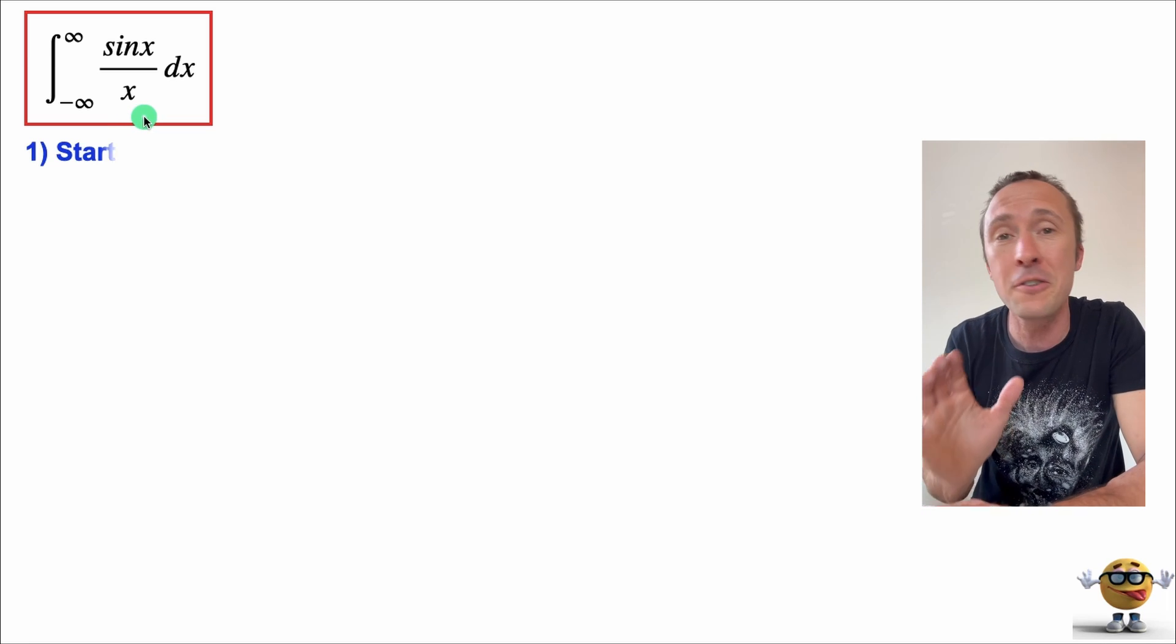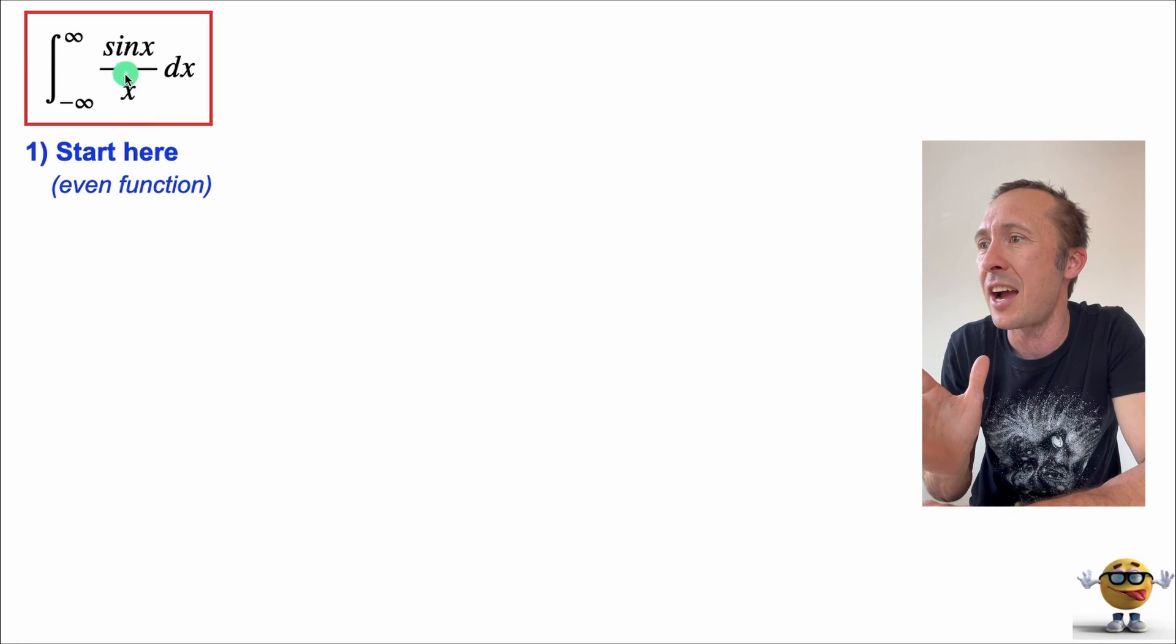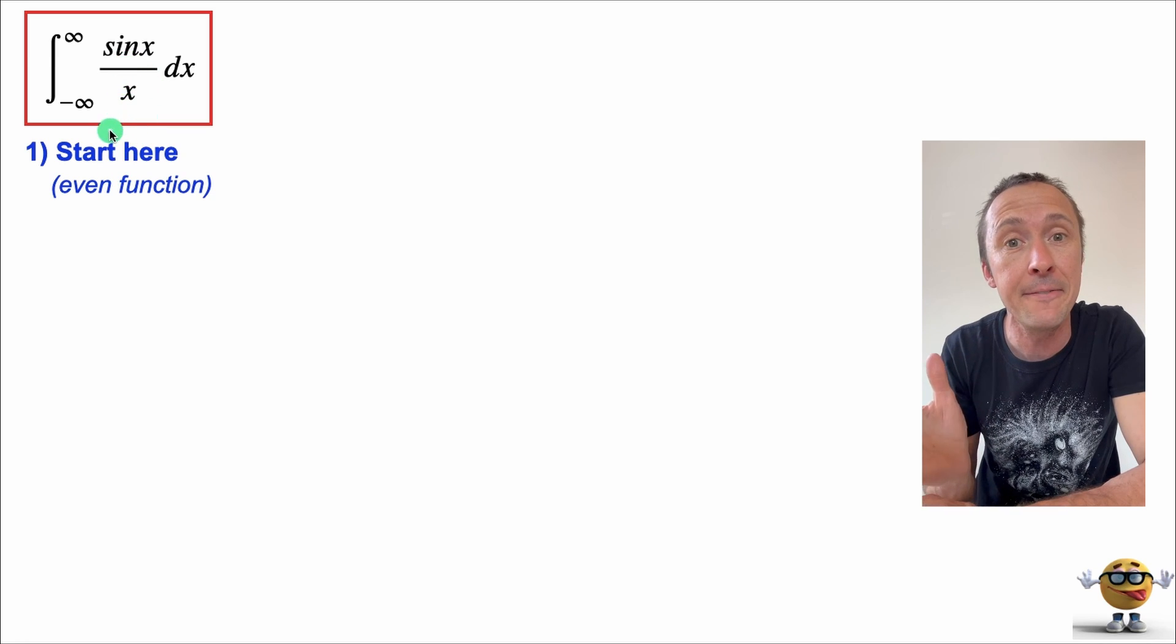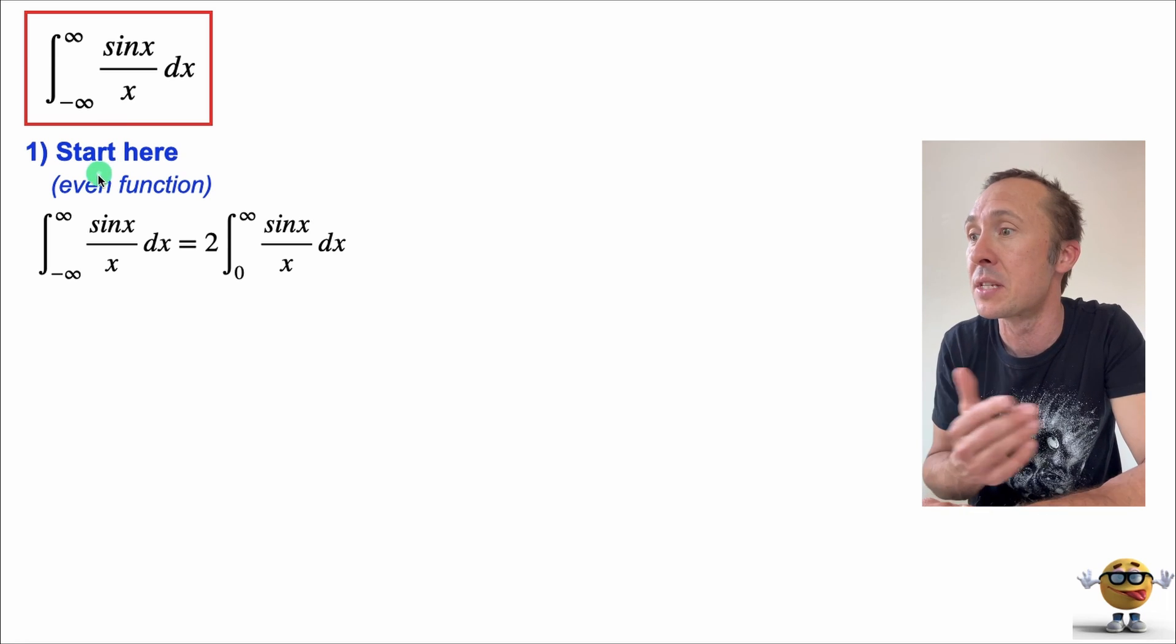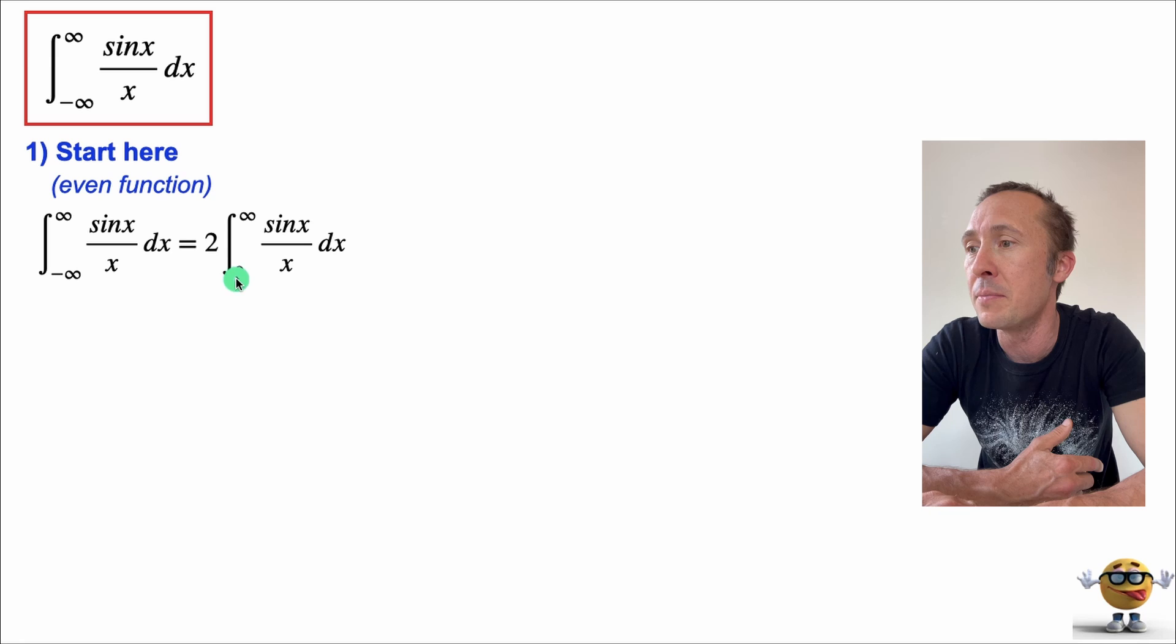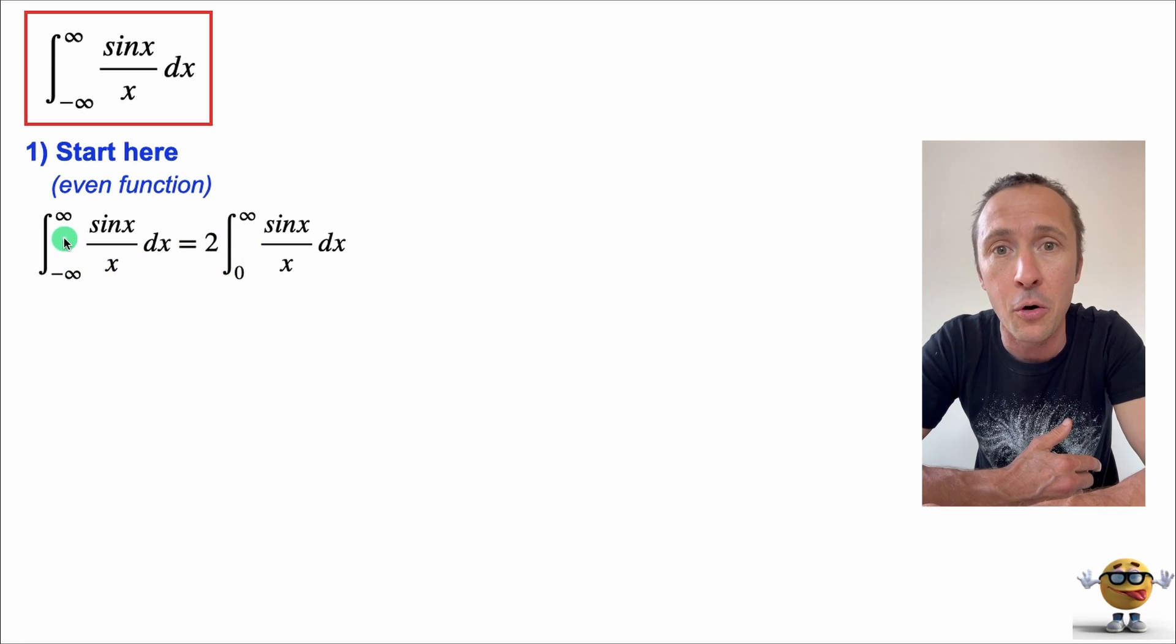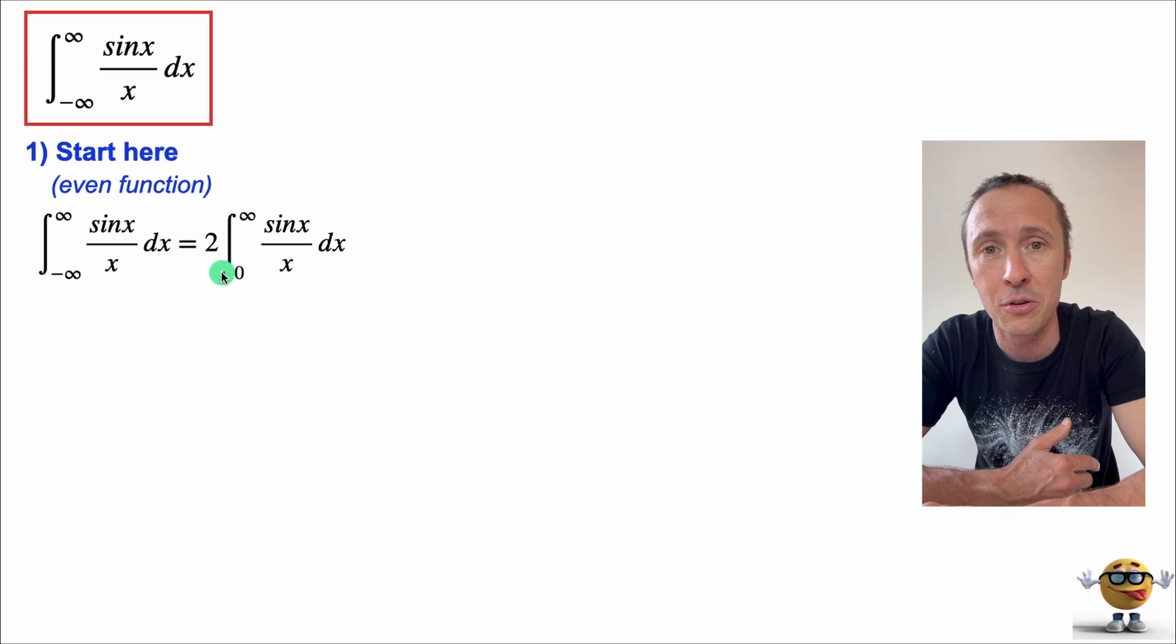Now, to do this integral, first thing I'm going to do, it's kind of like another trick. Recognizing that sin x divided by x is an even function, I'm going to change the limits of integration, and sometimes this helps. So rather than going from negative infinity to infinity, we're going to go from zero to infinity because the integral from negative infinity to zero is the same as from zero to infinity. So we're going to go from zero to infinity and then double it here. We're going to evaluate this integral right here.